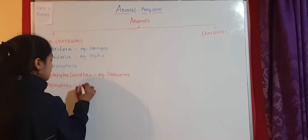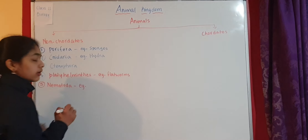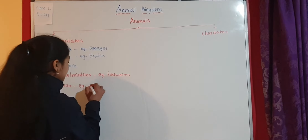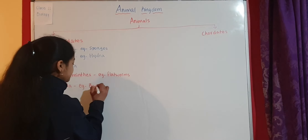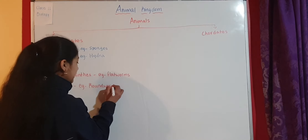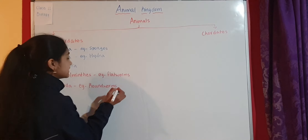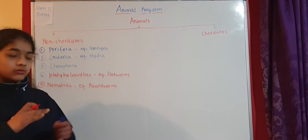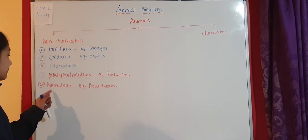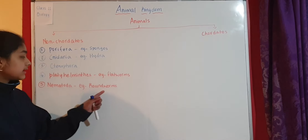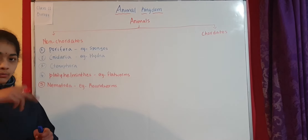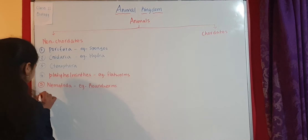The fifth phylum is called Nematoda, also known as Aschelminthes. There are two names here. Nematoda basically includes roundworms. Platyhelminthes has flatworms, and Nematoda includes roundworms — that means the worms are round or circular in shape.